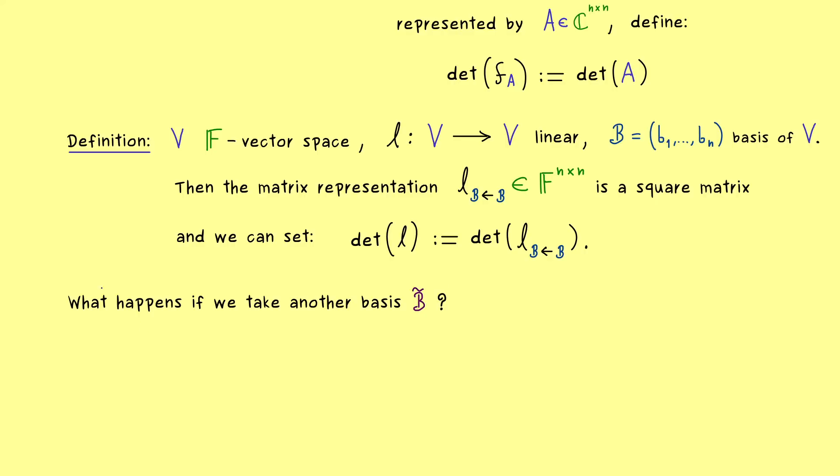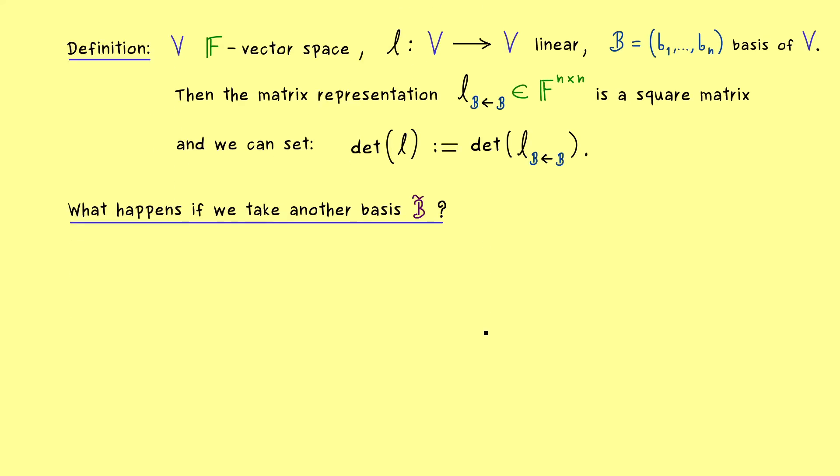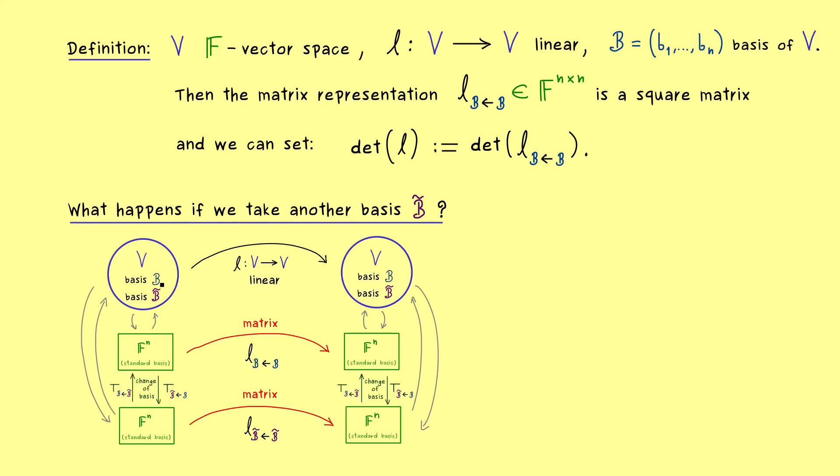So you might know, that this is something we have discussed a lot, it's just a change of basis. Therefore let's use the picture we have for that, that visualizes everything. This is it, and there you see, we have two levels, on the upper level the abstract linear map L, and on the lower level we have the two matrix representations LBB and LB tilde B tilde.